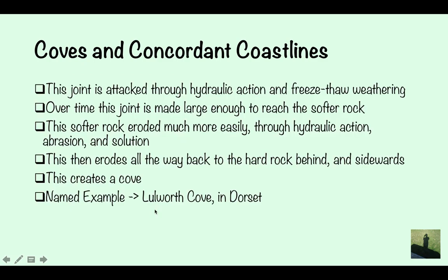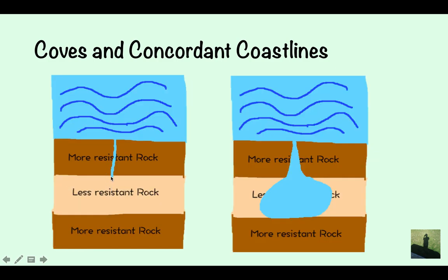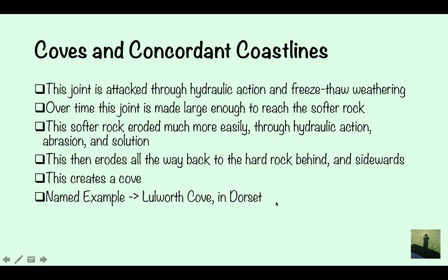The softer rock erodes all the way back until it reaches more resistant rock where the waves don't have the energy to erode further, so erosion occurs sideways, creating a cove. A named example is Lulworth Cove in Dorset.